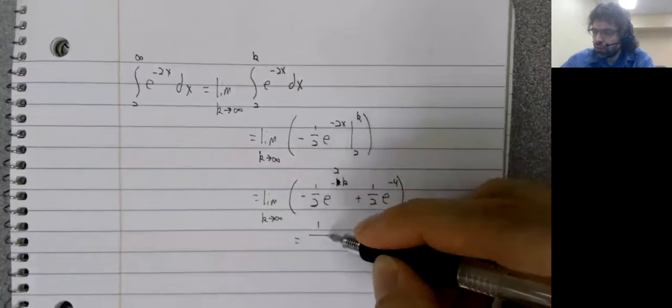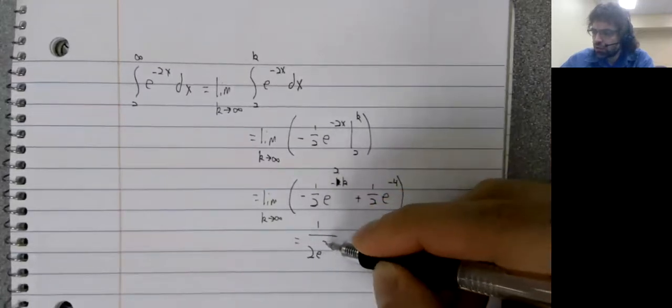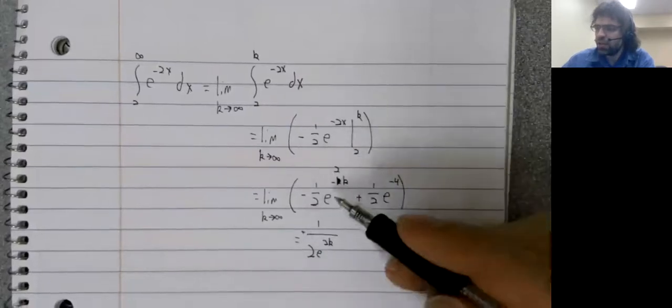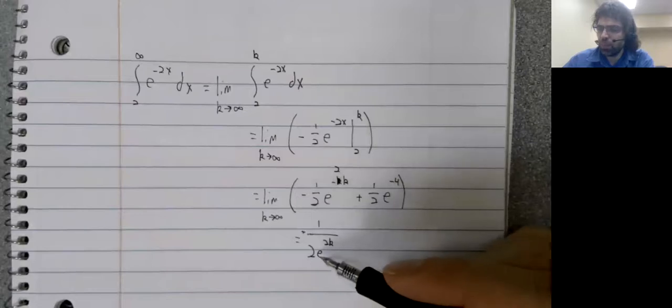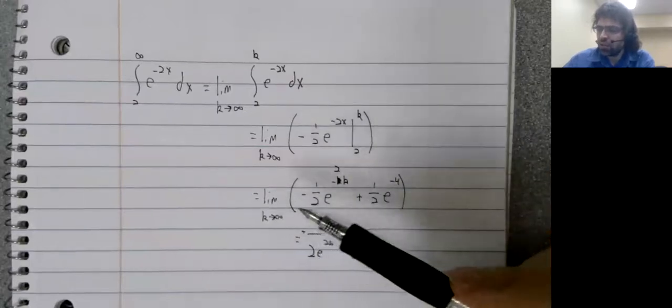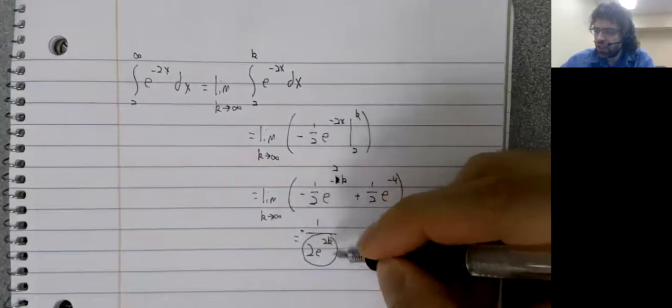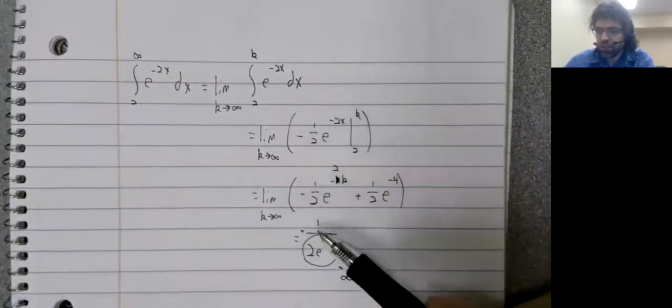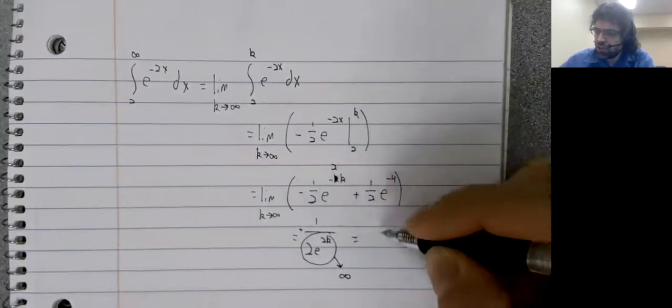If you don't see that, you can rewrite it. The k, because of this negative sign, is in the denominator. As k goes to infinity, this denominator goes to infinity, and 1 over infinity is 0.